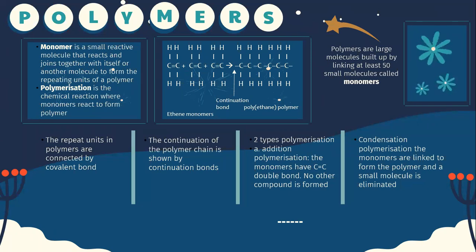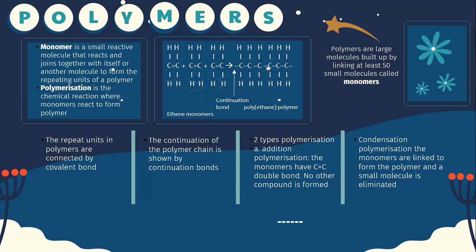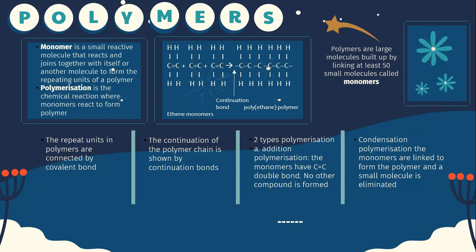Polymers are large molecules built up by linking at least 50 small molecules called monomers. A monomer is a small reactive molecule that reacts and joins together with itself or another molecule to form the repeating units of a polymer. Polymerization is the chemical reaction where monomers react to form polymers. This diagram represents the polymerization of ethene monomers to make the polymer polyethene.